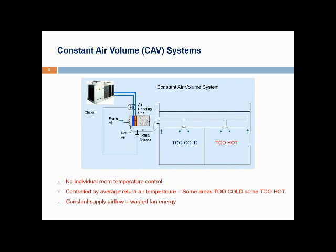The constant air volume system varies the cooling supply by varying the supply air temperature, but it cannot provide different temperatures for different rooms. The room with the temperature sensor gets overall control, or alternatively everyone has to live with control based on the average return temperature — meaning some rooms will be too hot and some too cold. And by having constant airflow whether cooling is needed or not, it wastes fan energy.